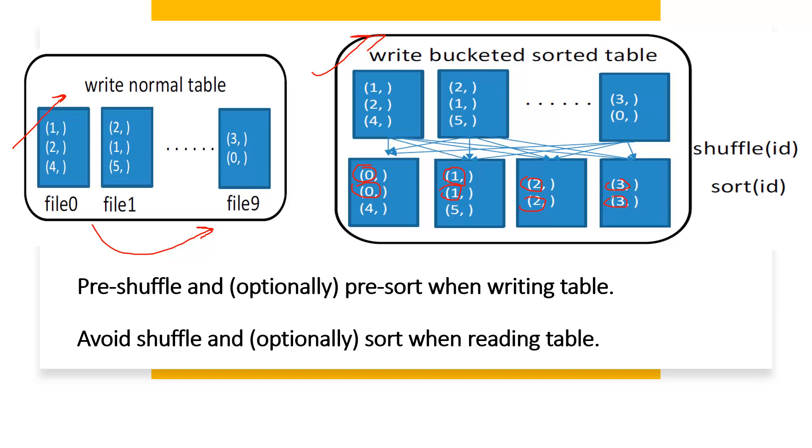All your data would already be shuffled and pre-sorted at the time of the write itself. So when you try to read the data from the bucket table, it doesn't need to shuffle the data further in case of operations like joins.